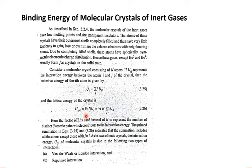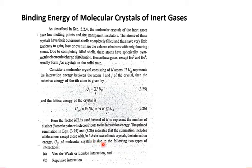From (1/2)N·U_I, substituting the expression for U_I, we get U_total = (N/2) Σ'_J U_IJ. The factor N/2 is used instead of N to represent the number of distinct I-J atomic pairs contributing to the interaction energy. The primed summation indicates that the sum includes all atoms except those with J equal to I.